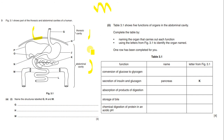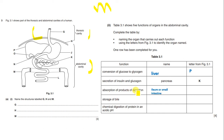Table 3.1 shows five functions of organs in the abdominal cavity. Complete the table naming the organ that carries out each function using the labels from figure 3.1. Conversion of glucose to glycogen occurs in the liver, labeled P. Absorption of products of digestion occurs in the ileum or small intestine, labeled L. Storage of bile is the gallbladder, labeled O.